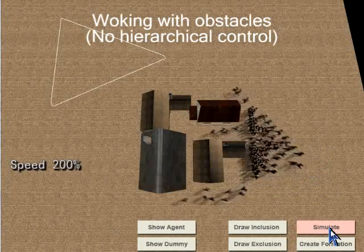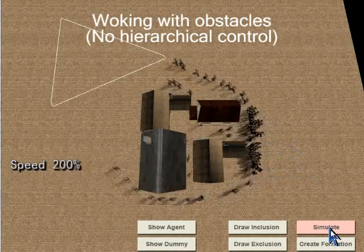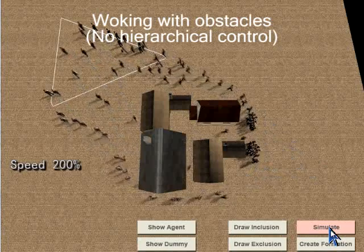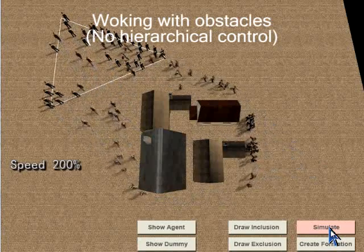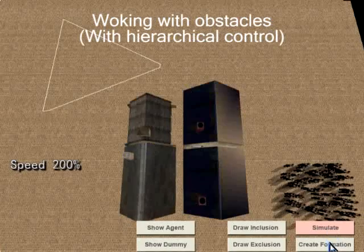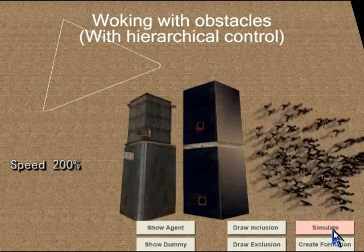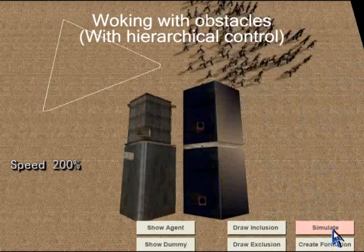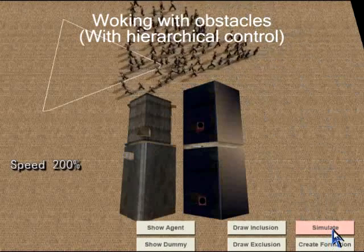If we only apply local collision avoidance to each agent separately, the formation is easily broken since every agent only follows its own optimal path. Here our hierarchical navigation control can move the whole group more consistently while changing the formation at the same time.